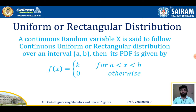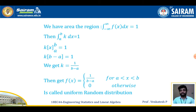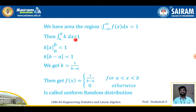Now we will find the value of k for the uniform distribution. Using the condition that the total area equals 1: the integral from minus infinity to plus infinity of f(x) dx = 1. Replacing f(x) = k over the interval (a, b), we get the integral from a to b of k dx = 1. Integrating, we get k(b - a) = 1, so k = 1/(b - a).